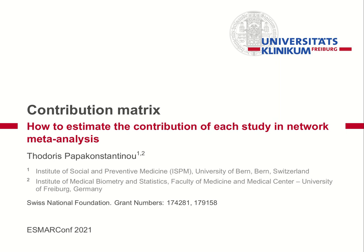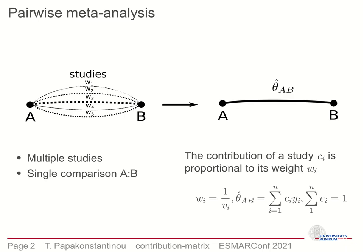I will start with the contribution of studies in pairwise meta-analysis. In pairwise meta-analysis we compare two treatments, say treatment A versus treatment B. We do that by synthesizing various studies examining this comparison. Each study, represented here with dotted lines, is weighted by the inverse of its variance.